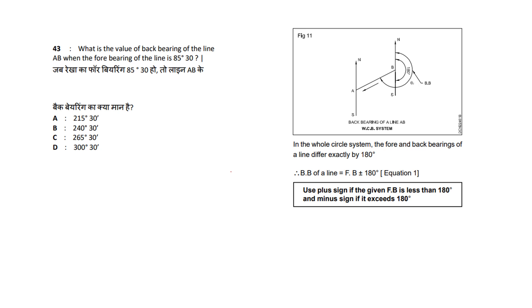Next question: what is the value of back bearing of line AB if the fore bearing is 85 degrees 30 minutes? The equation is: back bearing equals fore bearing plus or minus 180. Since the fore bearing value is less than 180, we use the plus sign. Back bearing equals 85°30' plus 180° equals 265 degrees 30 minutes. The answer is option C.